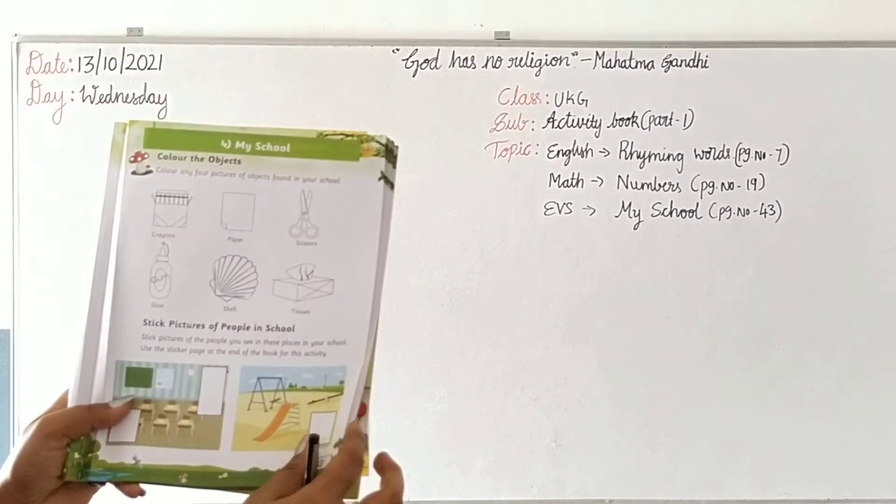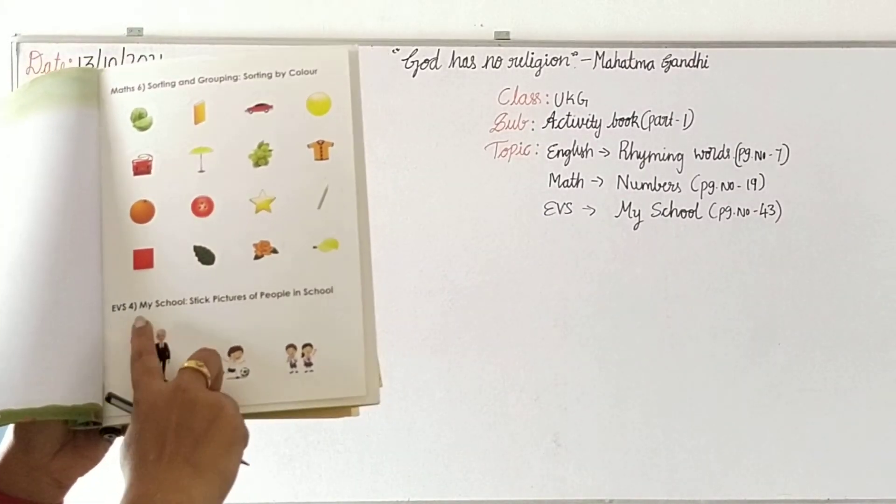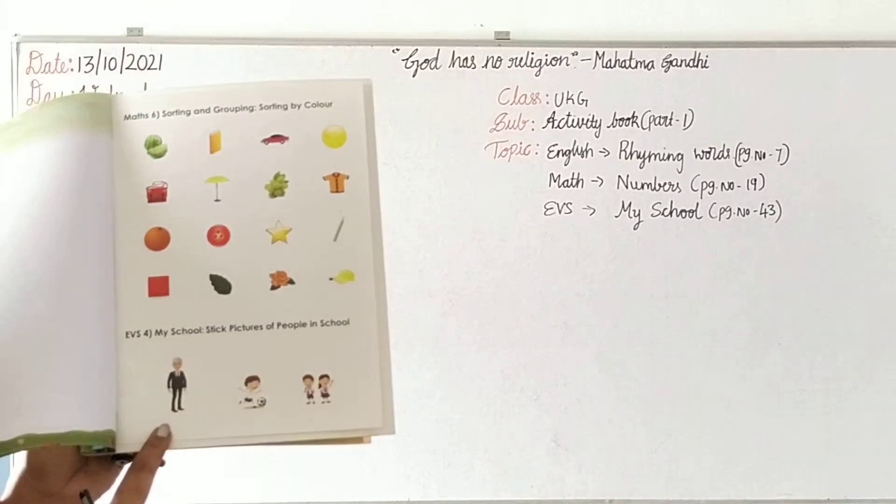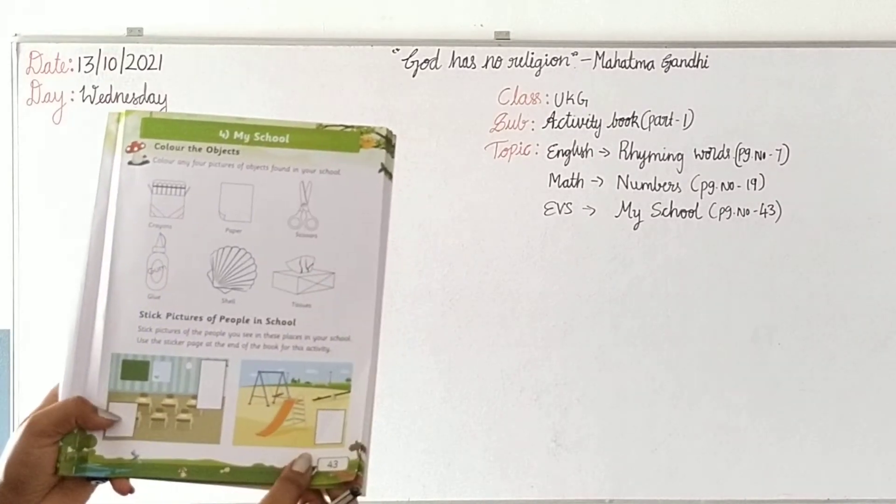Stick activity, children. See, the pictures have been given. My school - stick pictures of people in school. Who is this? He is a principal. So where you have to stick this? See, here you can stick it.